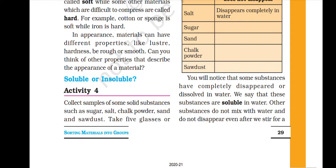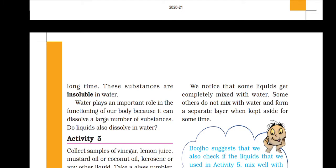You will notice that some substances have completely dissolved in water, like salt and sugar — these substances are soluble in water. Other substances do not mix with water and do not disappear — these substances are insoluble in water. Simply put: whatever substance disappears in water is soluble; whatever does not disappear is insoluble.